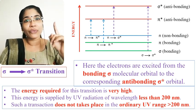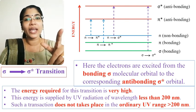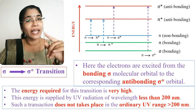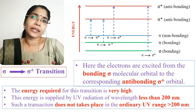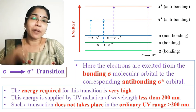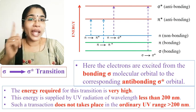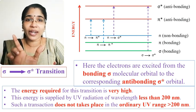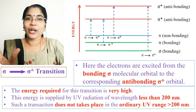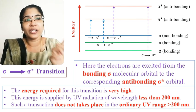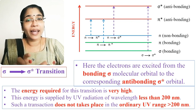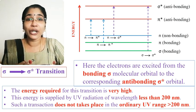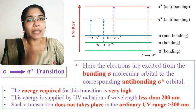Sigma to sigma star transitions are not observable in the ordinary UV range of 200 to 800 nanometers, because the energy required corresponds to wavelengths below 200 nanometers. Therefore, sigma to sigma star transitions are not possible in the standard UV-visible region.